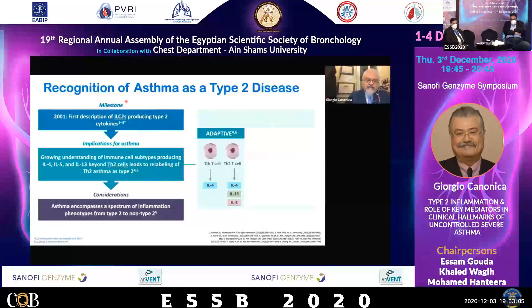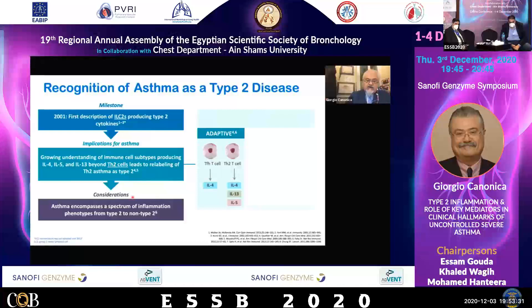A few years ago, a new cell had been described — the innate lymphoid cell 2 (ILC2), which is the one that we are mainly interested in. The implication is that we always considered the TH2 cell as the producer of the type 2 cytokines, whereas ILC2 cells are also producing them.